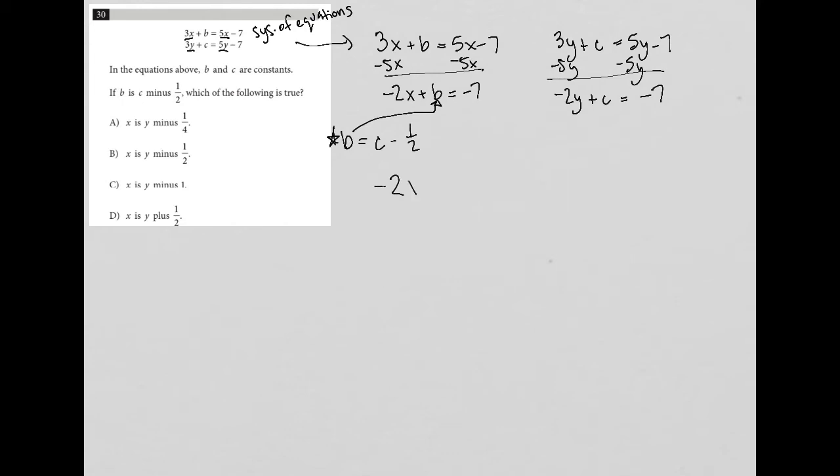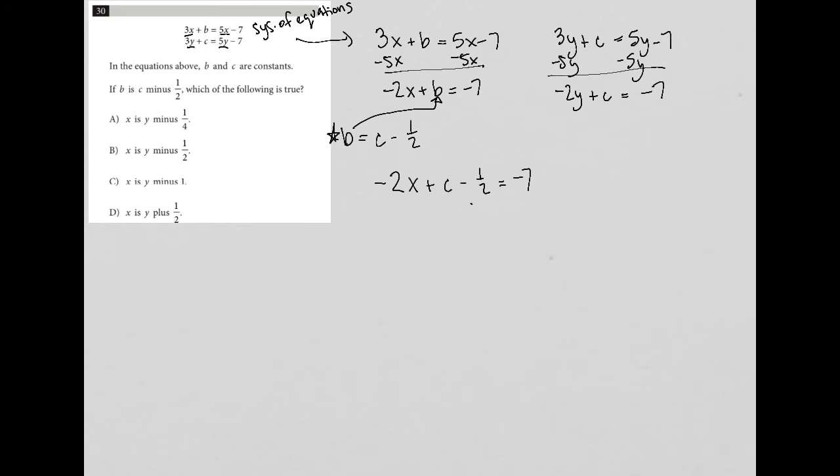So I have negative 2x plus c minus 1 half equals negative 7. When I simplify that, I can add 1 half to both sides. So I'd have negative 2x plus c equals negative 6 and a half, which I'll just write as negative 6.5. Actually, looking at the answer choices, I see that they all have fractions, so I'll just keep it at negative 6 and a half.